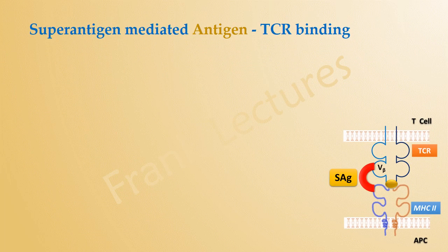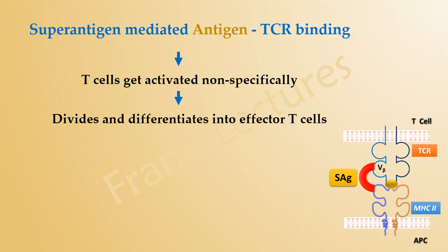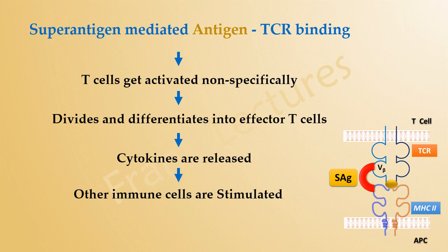The T-cell is now activated nonspecifically. It divides and differentiates into effector cells. These effector T-cells release cytokines which further stimulate other cells of the immune system. Because the number of T-cells sharing the V-beta domain is high, superantigens activate a large number of T-cells with different specificities. As a result, massive quantities of cytokines are released.